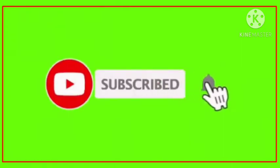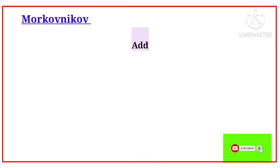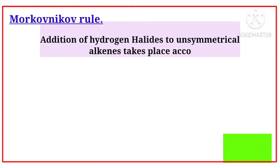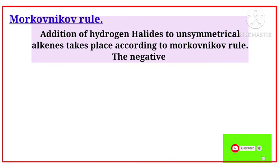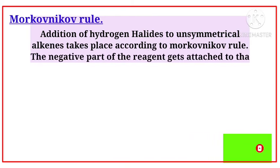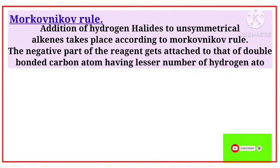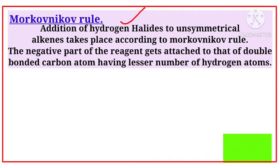Moving to the topic: what is Markovnikov rule? The addition of hydrogen halides to unsymmetrical alkenes takes place according to Markovnikov rule. The halides are chlorine, bromine, and iodine, and the hydrogen halides are HBr, HCl, and HI. The addition of hydrogen halides is also called hydrohalogenation.